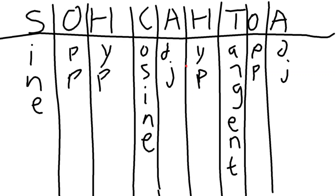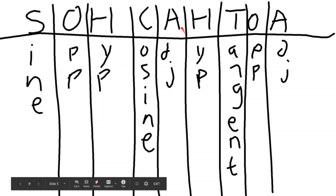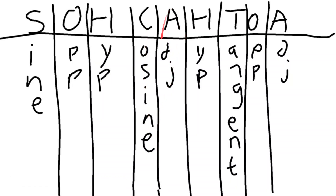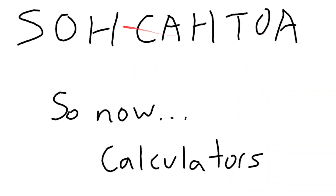There's an easy way to remember this. I don't use it personally but a lot of people do, so I'll mention it. It's called SOH-CAH-TOA. S is for sine: opposite over hypotenuse. C is for cosine: adjacent over hypotenuse. T is for tangent: opposite over adjacent.